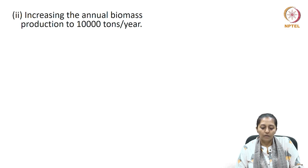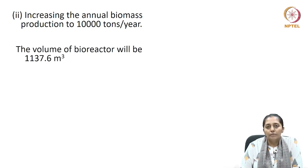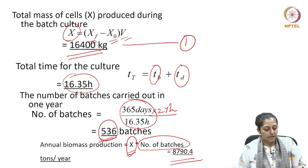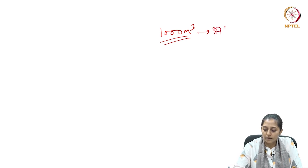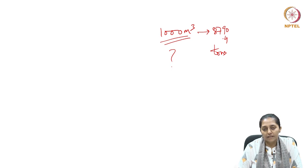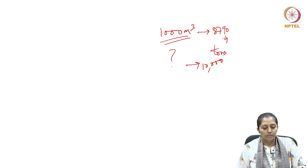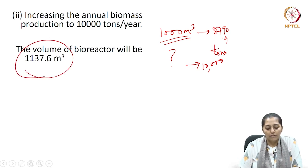In the second part of the question, it was asked what size of reactor should be chosen if the demand for biomass is raised to 10,000 tons per year. Since a 1000 meter cube reactor gives 8790.4 tons per year, it is a straightforward proportional calculation to find the volume needed for 10,000 tons per year, and the answer is 11,037.6 meter cube.